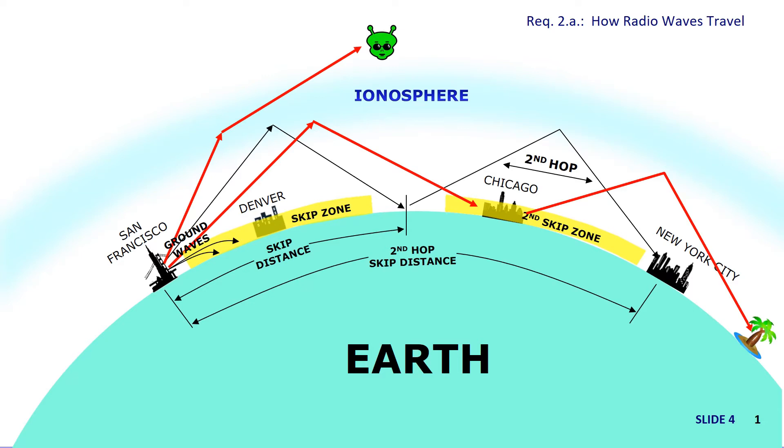And with a second hop, there is a second skip zone. In this case, no one in Chicago will hear my signal because it's traveling too high for their antenna to detect. The total of both hops is called the second hop-skip distance.